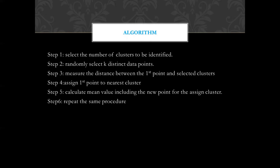Step 4: assign the first point to the nearest cluster. Step 5: calculate the mean value including the new point for the assigned cluster. For example, if k equals 3 and the first point is nearest to the second cluster, find the mean value of all data points in the second cluster — that mean becomes the new centroid. Step 6: repeat the same procedure until we get stable clusters.